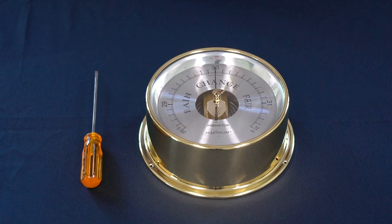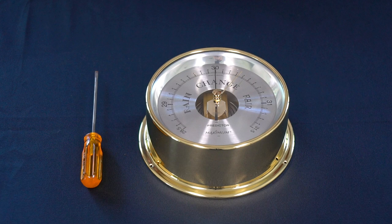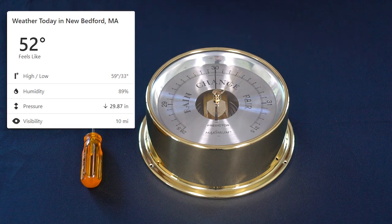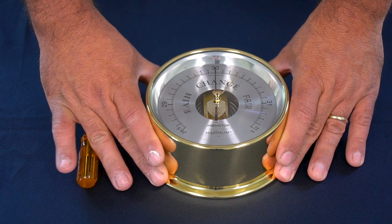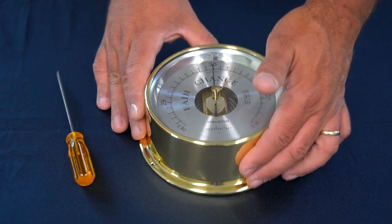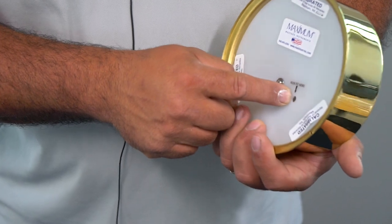Now we will be setting our predictor barometer for current pressure. We obtain online the current pressure for our area, which currently is 29.87 inches of mercury. The barometer currently reads 30 inches of mercury. To set the barometer, we will turn the instrument on the back.